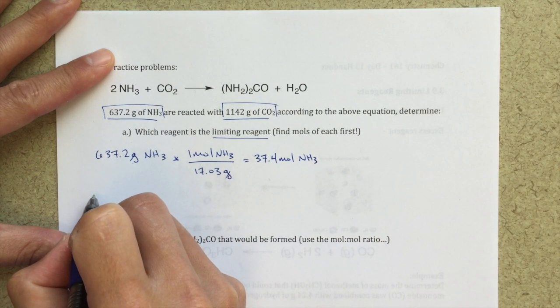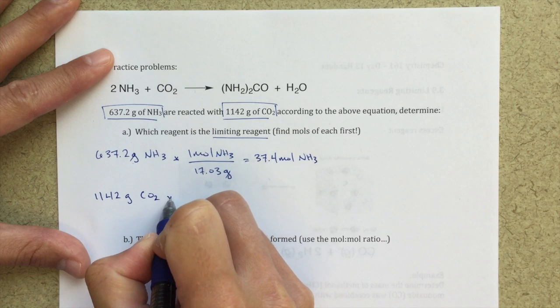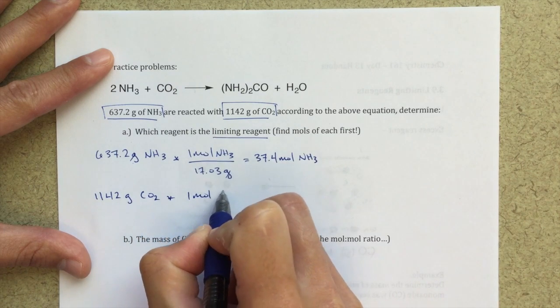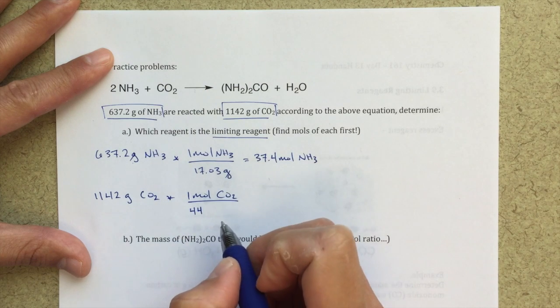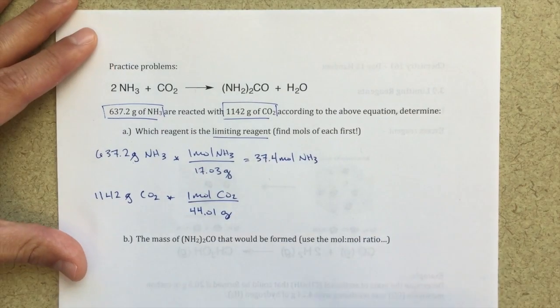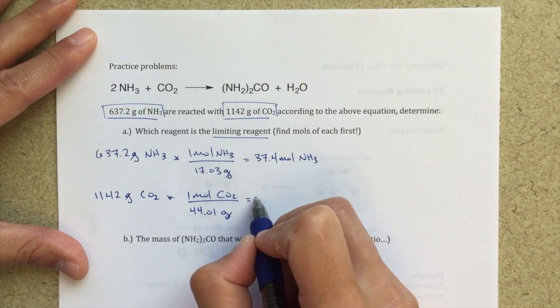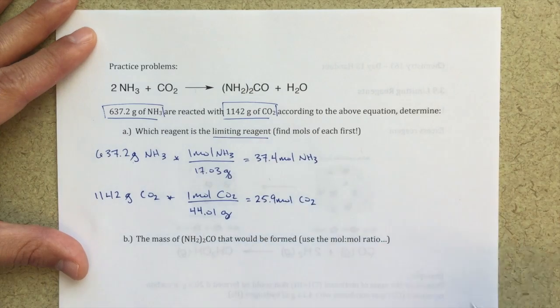For CO2, again I'm going to convert 1,142 grams of CO2 into moles of CO2, and that gives me 25.9 moles of CO2.